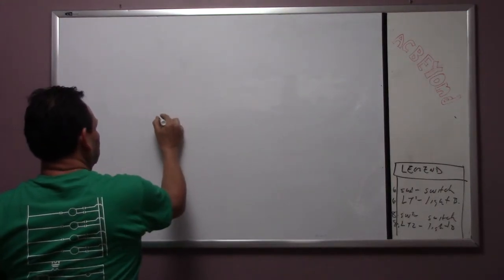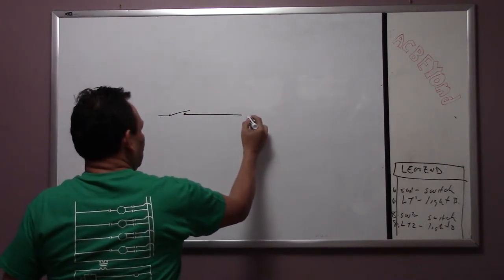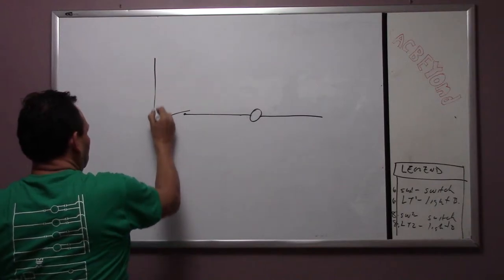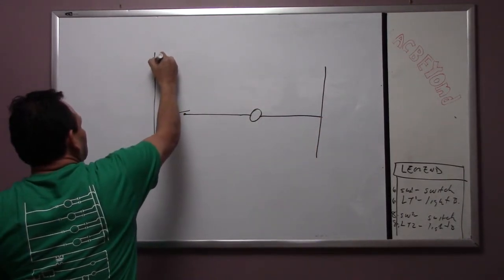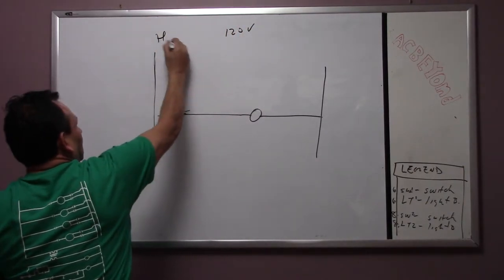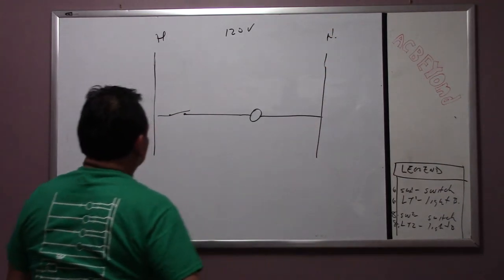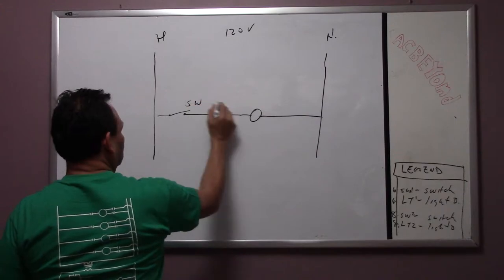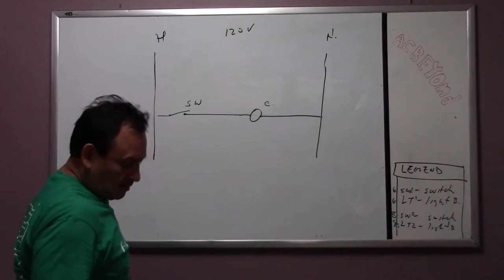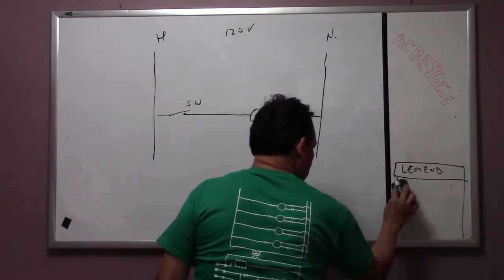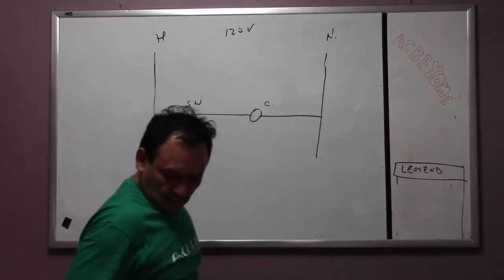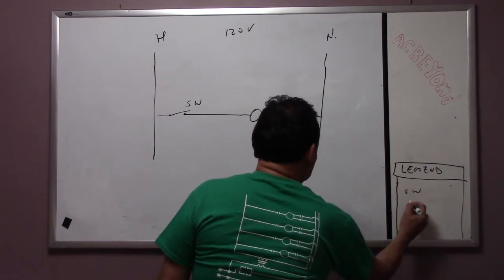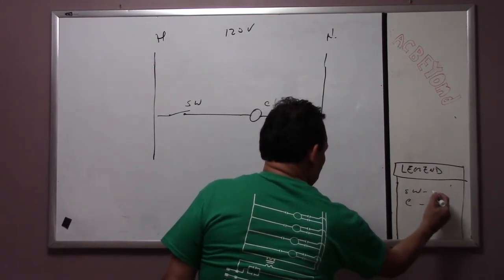We're going to continue with the switch, and this time we're going to add a coil. Let's start off simple — this is going to be 120V and this is neutral. This is a switch, and there's a coil — I'm going to label it SW and C. According to the legend, SW means switch and C means coil.